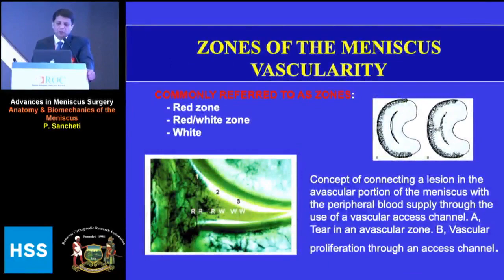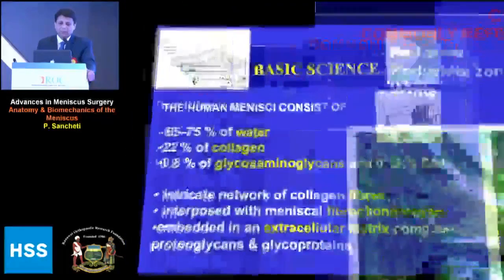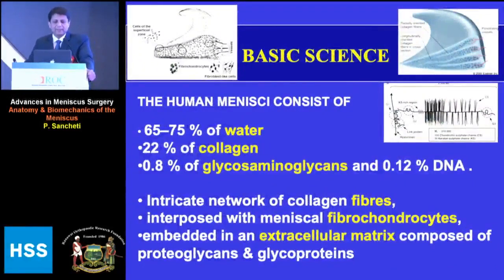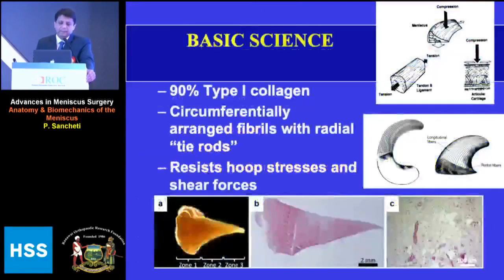Typically, longitudinal tears are located in the red zone and the red-white zone and are best repaired. Regarding basic sciences, the menisci consist of 70 percent water, 22 percent collagen, and the remainder is glycosaminoglycans, fibrocondrocytes, and other elements.